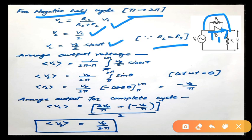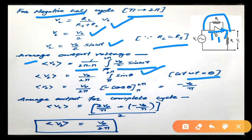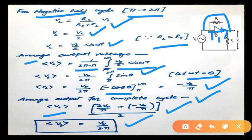The average output voltage for the negative half cycle is (1/π) × ∫_π^{2π} (V0/2) sin(ωt) dt. Substituting ωt = θ: (V0/2π) × ∫_π^{2π} sin(θ) dθ. Applying limits gives −V0/π. The average output voltage for the complete cycle is (2V0/π + (−V0/π)) / 2 = V0/2π. So V0/2π is the correct answer.